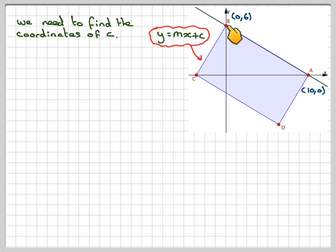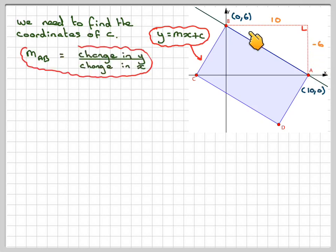But I can also find the gradient of AB, and M stands for the gradient. So the gradient of AB, if we draw some lines in, draw that line and draw that line there, then this distance here is 10, and this distance here we go down 6, so we write down minus 6. And the gradient is the change in Y divided by the change in X. So it's going to be -6 over 10. Now we should simplify that so it becomes -3 over 5.